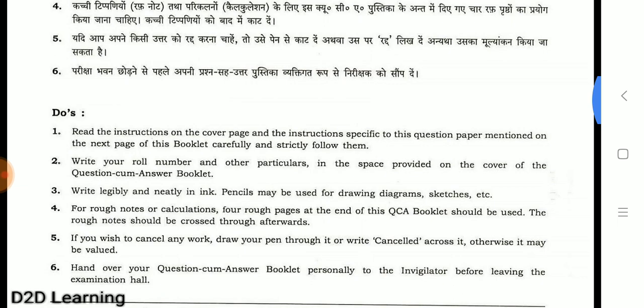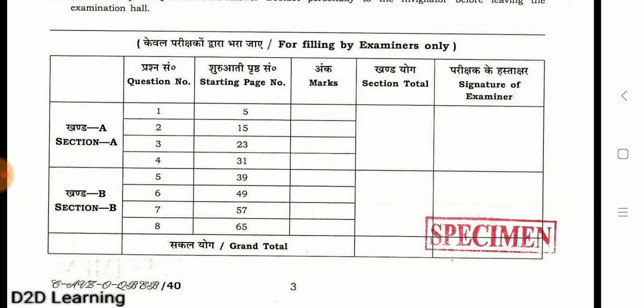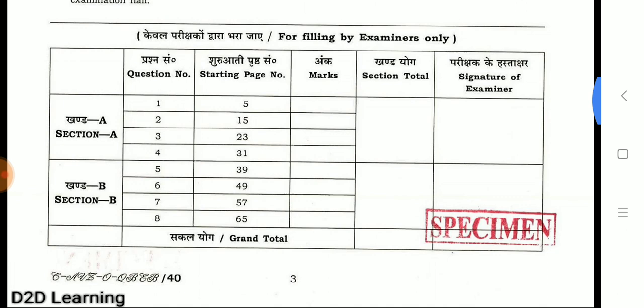Now let's go to the marks. The first question starts at page number 5. You can mark and sign your attempted questions. The optional paper has a grand total structure: the first final set is Section A and the second final set is Section B. There are choices — questions 1, 2, 3, 4 — and points are structured accordingly.